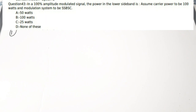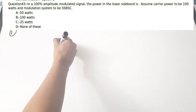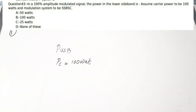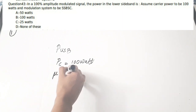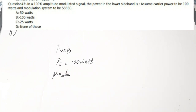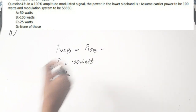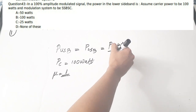The modulation system is SSBSC, that is single sideband suppressed carrier. We need to find the power in the USB, P_USB. Given: P_c = 100 watts, and it is a 100% modulation system, so modulation index mu = 100/100 = 1. We don't need the SSBSC detail for this calculation. The equation for power in either sideband is: P_USB = P_LSB = P_c × mu² / 4.